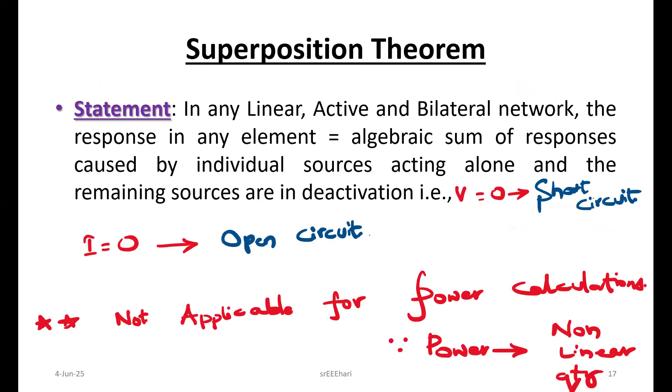Coming to the superposition theorem statement: in any linear active bilateral network, the response in any element is equal to algebraic sum of responses caused by individual sources acting alone, and the remaining sources are in deactivation. Voltage to 0 means short circuit. Current to 0 means open circuit. Remember one thing: it's not applicable for power calculations. Power is a non-linear quantity.